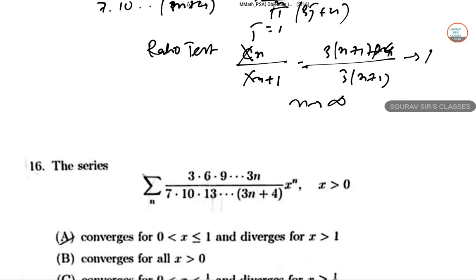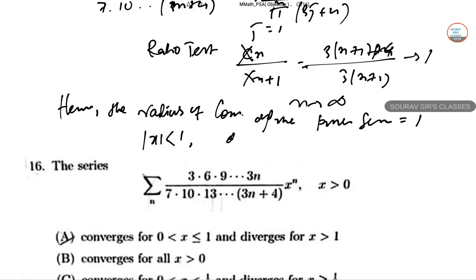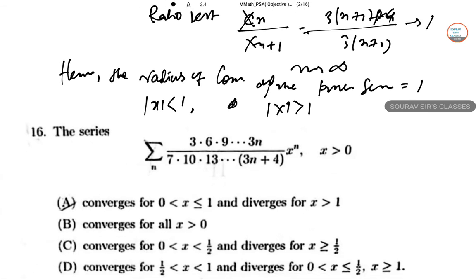So hence the radius of convergence of the power series equals 1. The series is convergent if |x| less than 1 and divergent if |x| greater than 1. Now we have the problem at x equals 1.